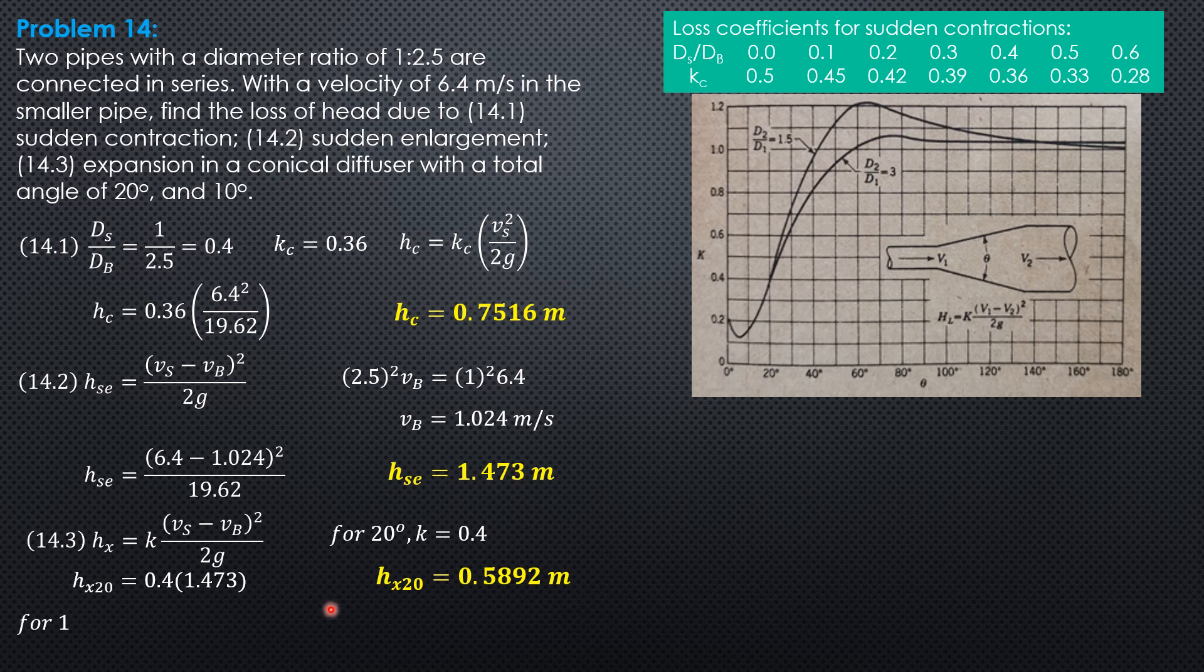For 10 degree angle, here it is 0.16 because this is 0.1. And it is more than half between 0.1 and 0.2, so 0.16. k is 0.16.